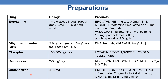The next is ondansetron, which is an antiemetic. The dose is 4 to 8 mg. Marketed products are Mset, Vomis, Ocetron, and Emsetron, available in 4 and 8 mg tablets and also as 2 mg per ml injection in 2 and 4 ml ampoules. For pediatric preparation, ON-T and Mset are available as 2 mg per 5 ml syrup.